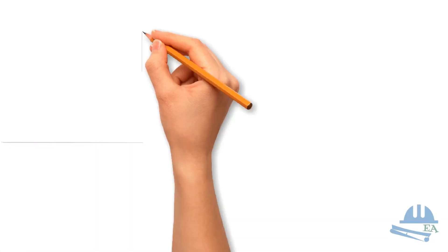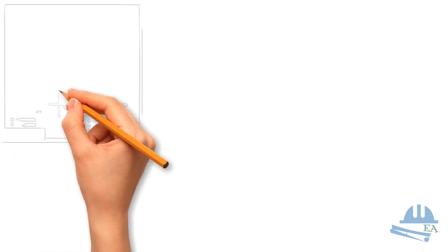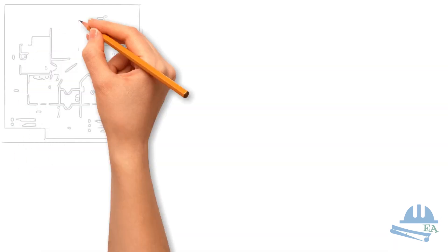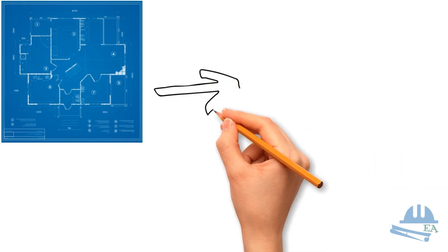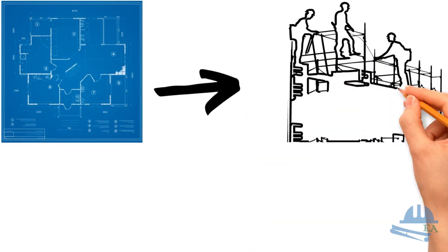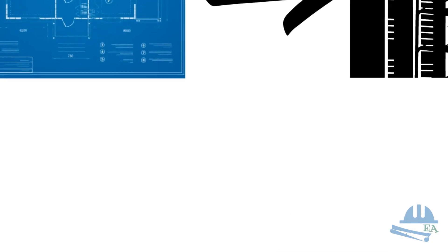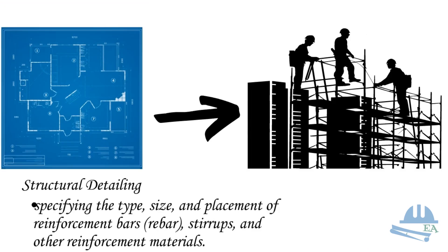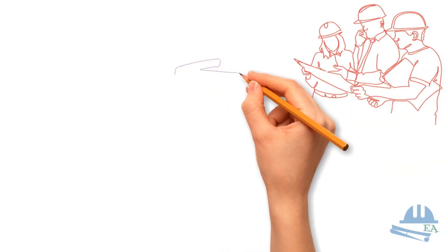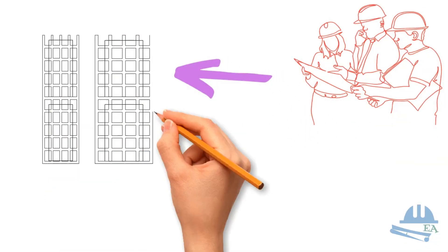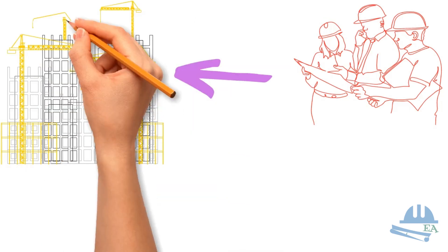Detailing in structural design refers to the process of providing precise and comprehensive instructions for how structural elements should be assembled, connected and reinforced. This includes specifying the type, size, and placement of reinforcement bars, stirrups, and other reinforcement materials. Proper detailing ensures that different structural members work together to take loads and resist stresses.